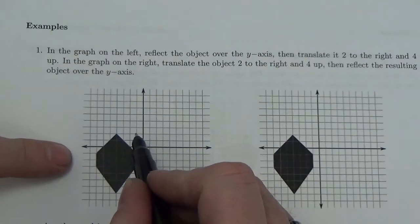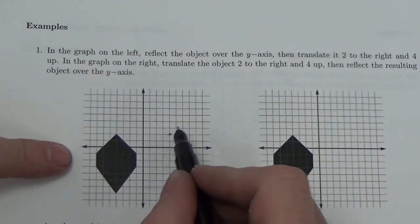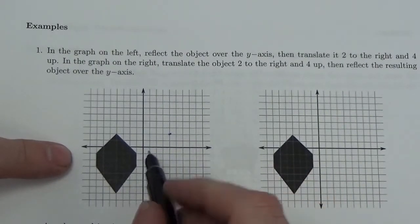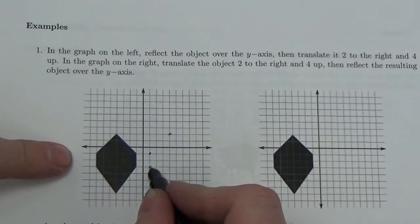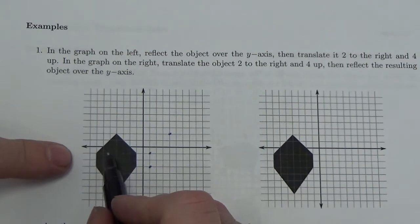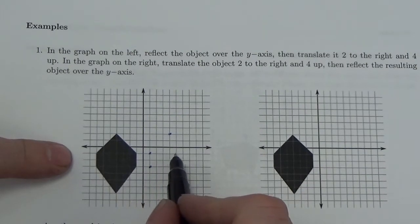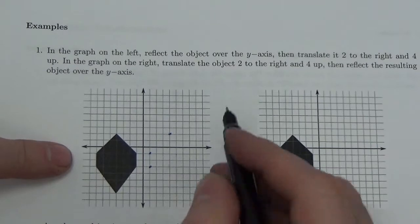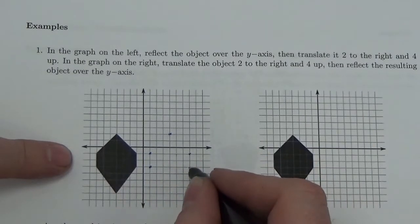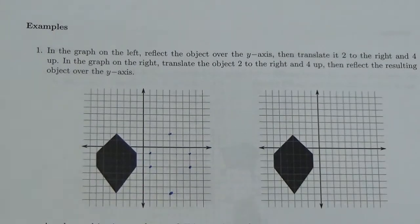This point here is 4 away from the y-axis. This one is 1 away, and it's 7 units up. So on the other side it will be 7 units over. That one goes down here. And then this one was 4, so it goes 4 across. Those are where my points go after I flip it over.